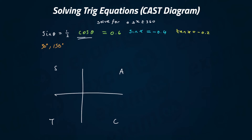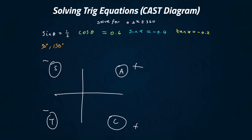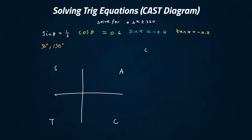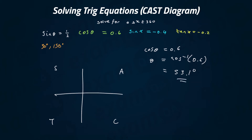Now we're working with cos, so be careful. Cos is positive, and 'all' is always positive — these two are the negative quadrants. The question is cos theta equals 0.6. We do shift cos of 0.6 and get 53.1 degrees to one decimal place as our principal value.